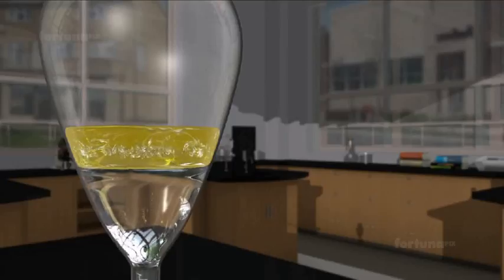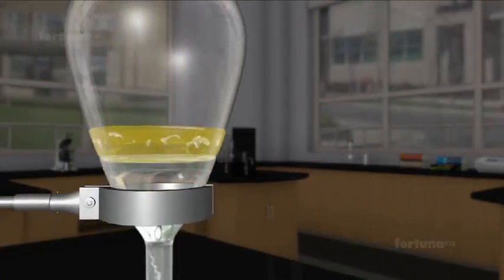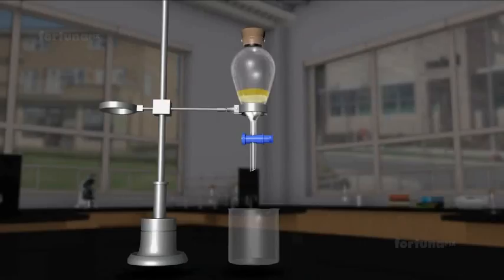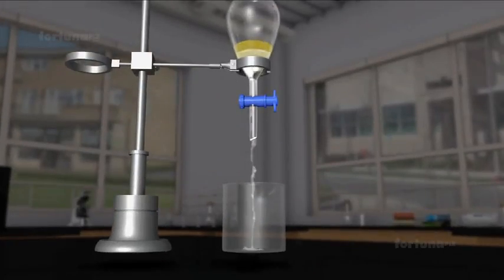Now, we'll place a beaker underneath the separating funnel and remove the stopper. We can open the tab and let the water collect in the beaker,